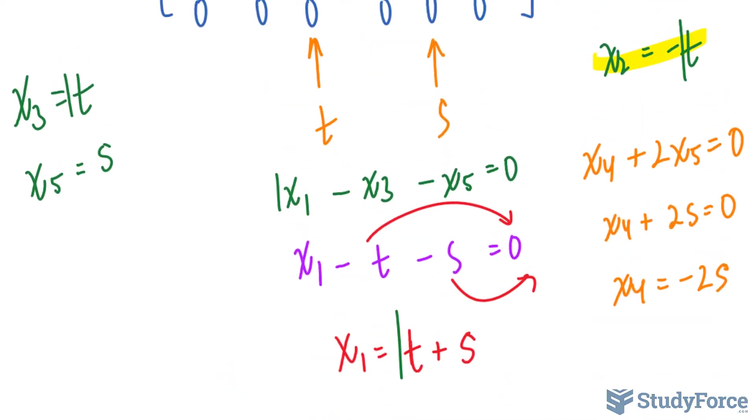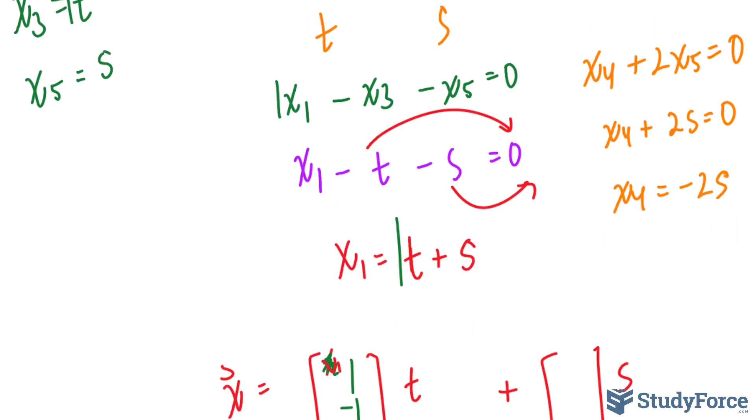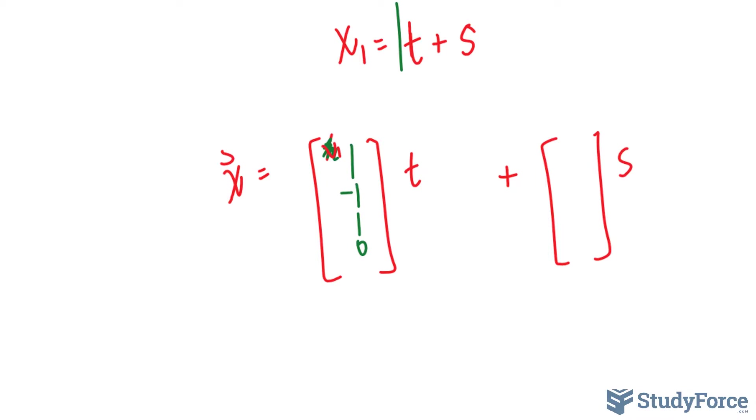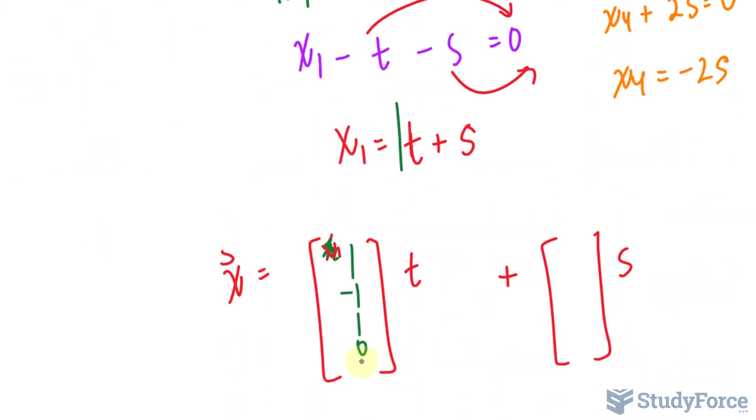Do we have an equation for x sub 4? Yes, we do. It's over here and there's no relationship with t. So, it's 0. For x sub 5, it's only related to s. So, again, t will be 0 there.